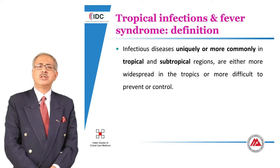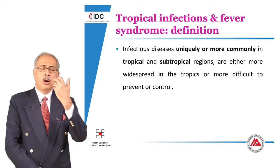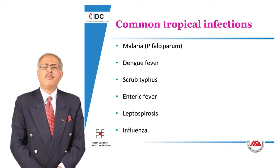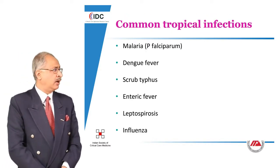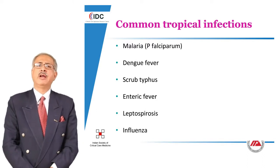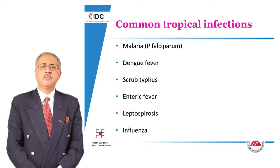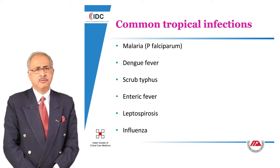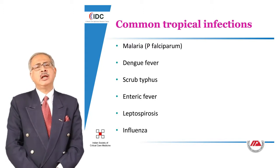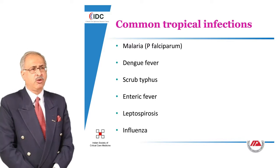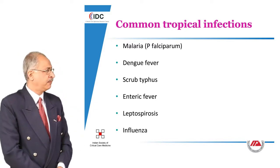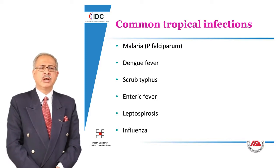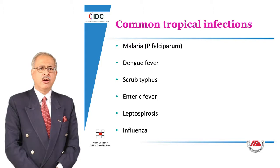Similarly, quite a few of these diseases are also transmitted by mites. The common tropical infections in our subcontinent include malaria, where Plasmodium falciparum is the most important species. However, of late, we are also seeing a malignant form of Plasmodium vivax. A further dimension has been added by the introduction of Plasmodium knowlesi infection in our country. Dengue fever is another important disease, and all of you must be aware that recently there has been a huge epidemic of dengue fever.